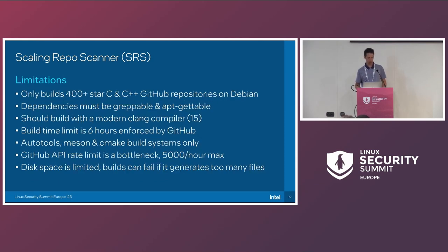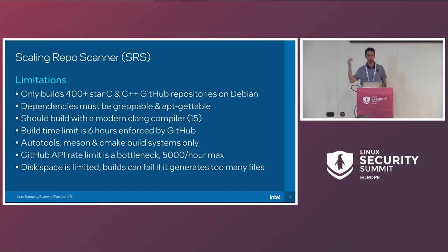Some limitations on data collection: we only look at repositories with 400-plus stars — we wanted reasonably mature projects, and 400 is a number that works for us. Dependencies were a big roadblock for static analysis — you have to actually build these projects. To handle this automatically, we grep for any apt or apt-get line in the repository and install everything that follows. The whole thing runs in Docker, so we just try to install everything. We support three build systems: AutoTools, Meson, and CMake.